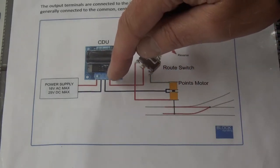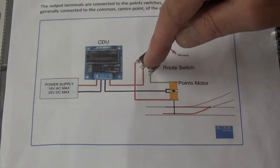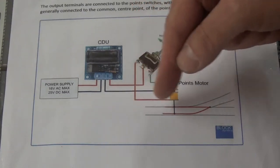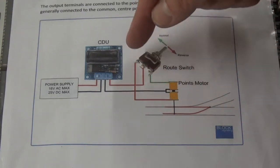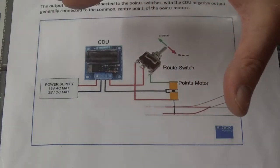Then the red wire goes from the CDU out to the central neutral position of the toggle switch, and then the other two sides of the switch go to either side of the point motor. So it's relatively straightforward to do electrically.